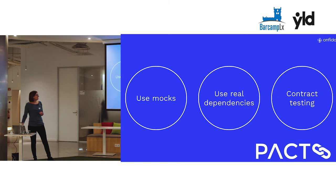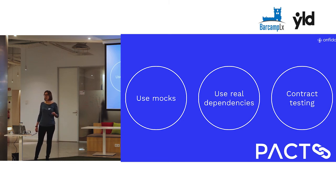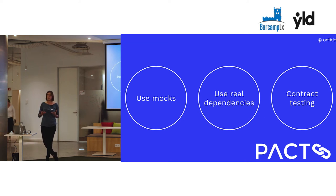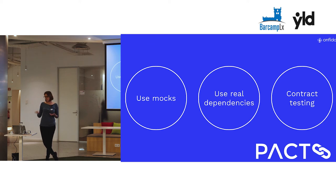At Onfido, we use PACT for contract testing. PACT is a consumer-driven contract testing tool provided by PACT Foundation. Being consumer-driven means that it's the service that consumes the API that establishes what it is expecting to receive when it sends a certain request. And the contract is devised based on those expectations.